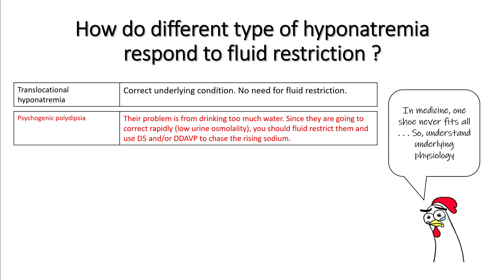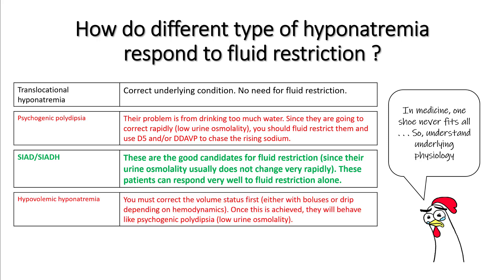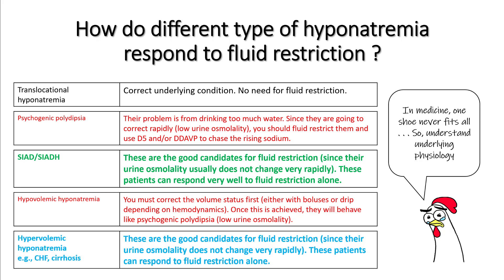Use D5 and DDAVP to chase the rising sodium. In SIADH or SIAD, these are good candidates for fluid restriction since urine osmolality does not change very rapidly and these patients can respond very well to fluid restriction alone. In hypovolemic hyponatremia, after you correct the volume status, these patients behave like psychogenic polydipsia — fluid restrict them and use D5 and DDAVP to prevent sodium from rising rapidly. Hypervolemic hyponatremia patients are also very good candidates for fluid restriction and can respond to fluid restriction alone.